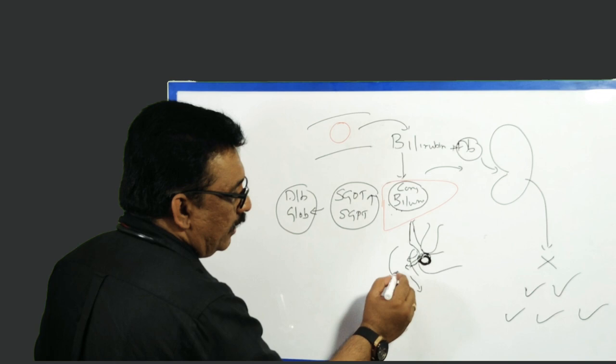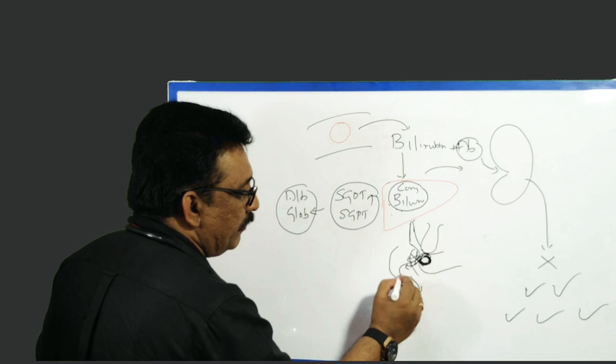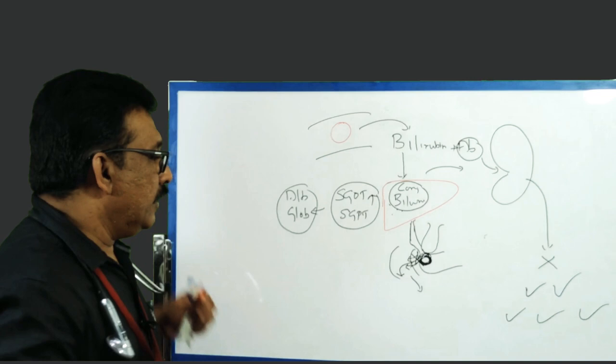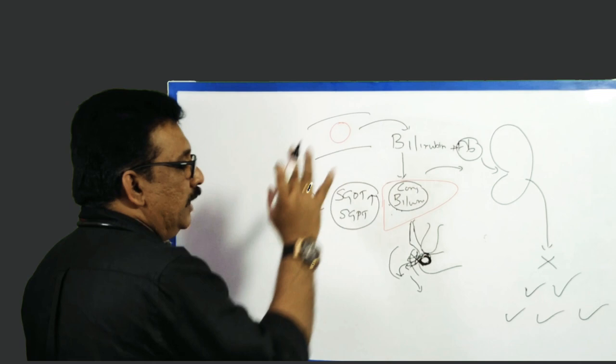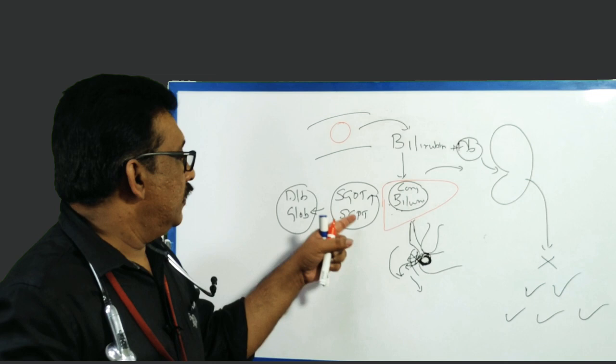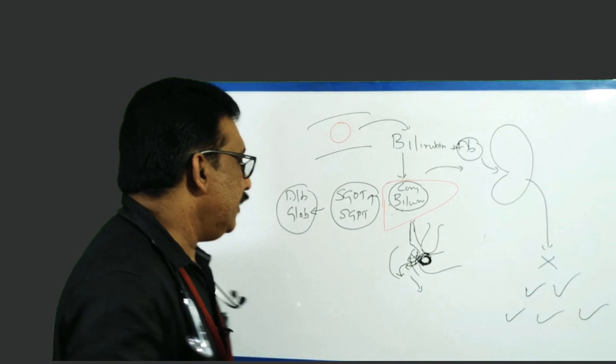Normally, bilirubin goes to the stool through the biliary tract and gives a golden yellow color. If there is a block, bilirubin will not reach the intestine, so the stool will not have normal color — you get clay-colored or pale stool. This is an important clinical clue: very dark urine, deep jaundice, and pale or clay-colored stool are classic findings of obstructive jaundice.